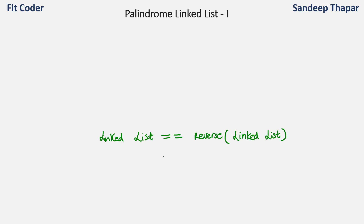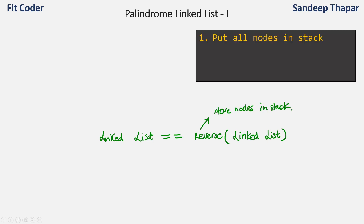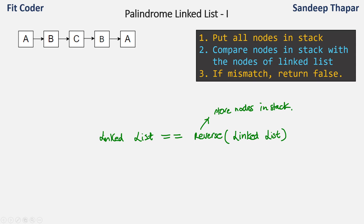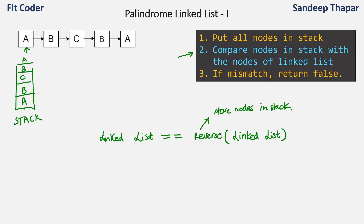To find the reverse, one easy method is to store all the nodes in a stack. In the first step we push all the nodes in the stack, then we compare the nodes in the stack with the nodes in the linked list. If there is a mismatch we return false. The benefit of using a stack is that the last node of the linked list ends up on top, so the stack stores the reverse. We start comparing the top of the stack with the pointer at head of the linked list.